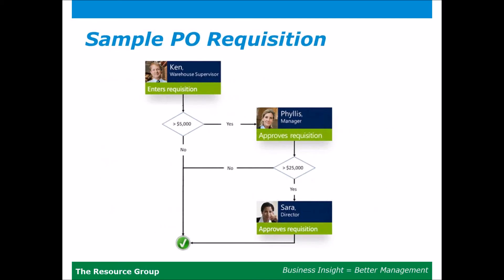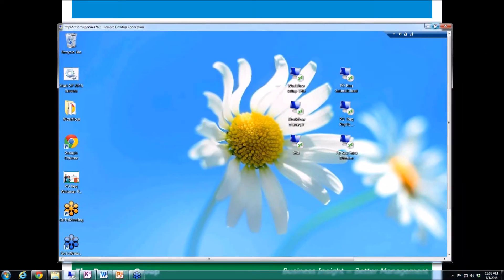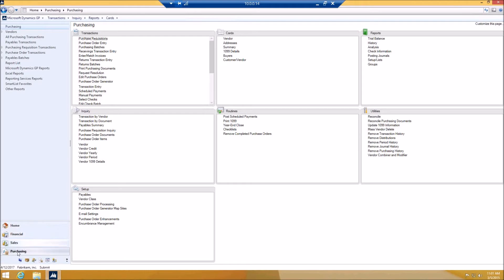The sample PO requisition I'm going to show today has Ken as a warehouse supervisor who will enter the requisition. If the requisition is less than 5,000, no action will be needed — it'll automatically be approved. If above 5,000, it'll automatically go to Phyllis, his manager, for approval. If above 25,000, it'll be routed to Sarah. Today I'll set up three requisitions: one less than 4,000, one under 25,000, and one above 25,000.